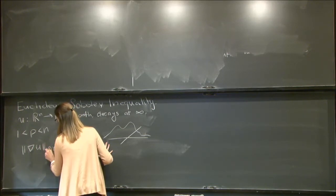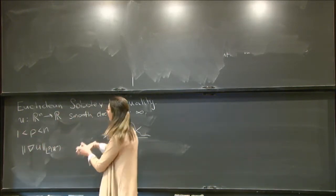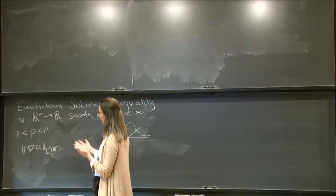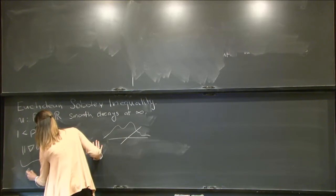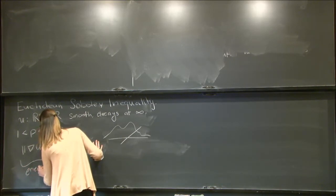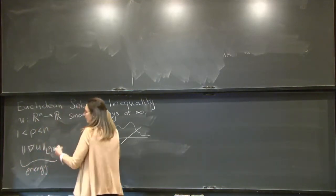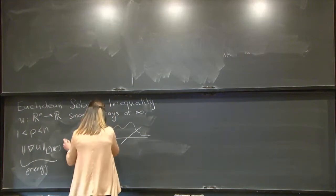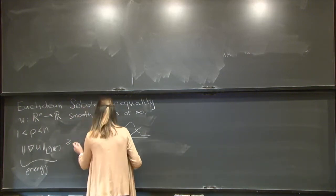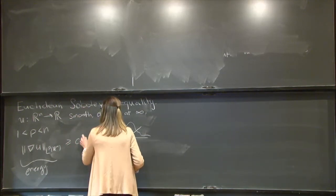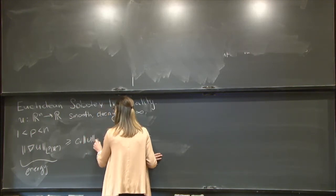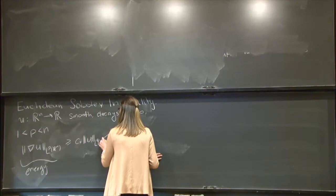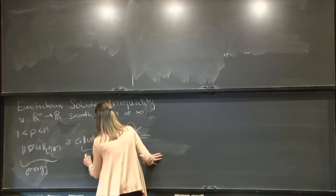what the Sobolev inequality says is that the norm of the gradient of this function in LP of R^n—so already you may hate this talk if you're a number theorist, but the way you should view this is this is some sort of energy of this function. View this as an energy. This is just some measure of the size of the derivative of the function. It controls, up to a constant,